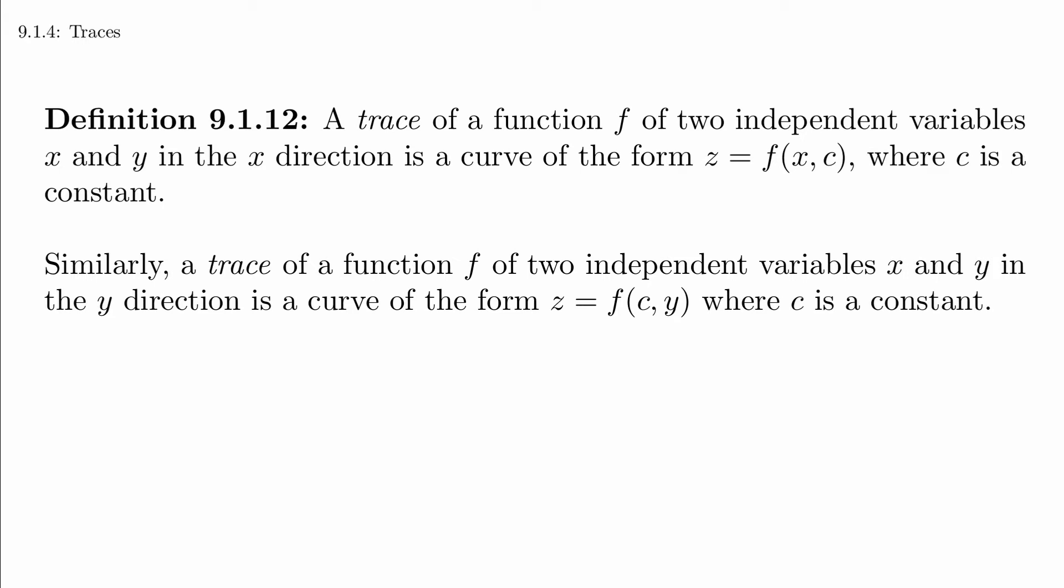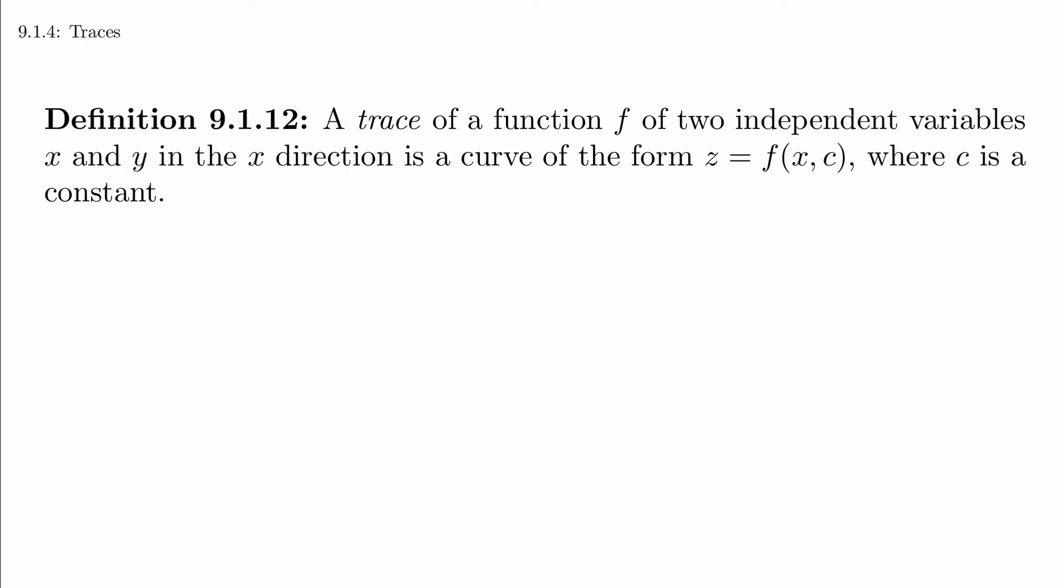This is a lot of words, so what does it mean? Let's focus on the first part. We're evaluating the function along points of the form x,c. In other words, we fix the y-value and let the x-value be free to move. It's a trace in the x-direction because the movement is in the x-direction.